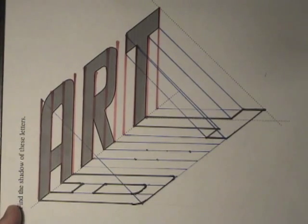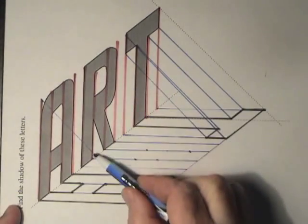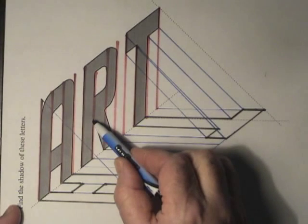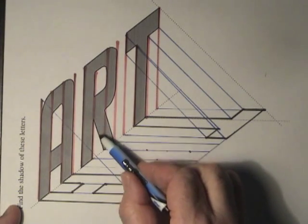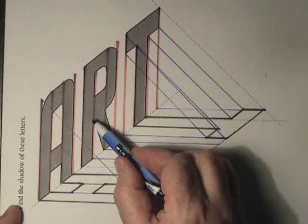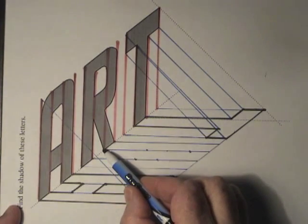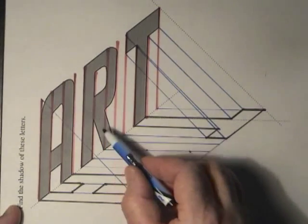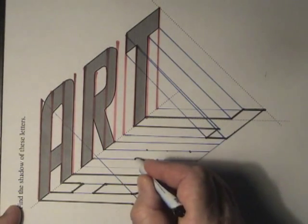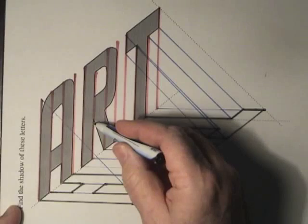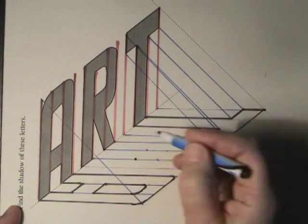Moving on to the R, we still have our divisions here, but we have to find out where this top is here of the V shape. But we do know that the shadow goes from this point to here. So if we find this point, which is right here, we know it's going to slant down to this corner.